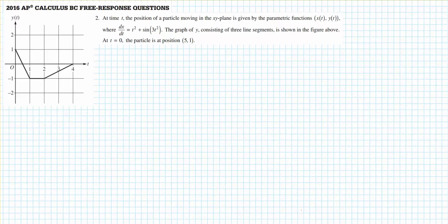This problem is number 2 from the 2016 AP Calculus BC exam. At time t, the position of a particle moving in the xy plane is given by parametric equations x of t and y of t. It gives you the equation for dx dt, which is the rate of change of the x position in relation to t, and also gives you a graph of y. It gives you an initial condition when t equals 0, the position of the particle at t equals 0, which is 5, 1.